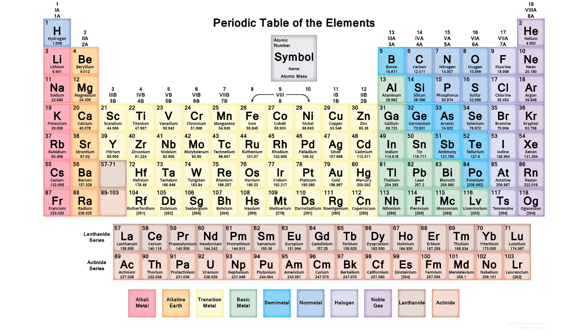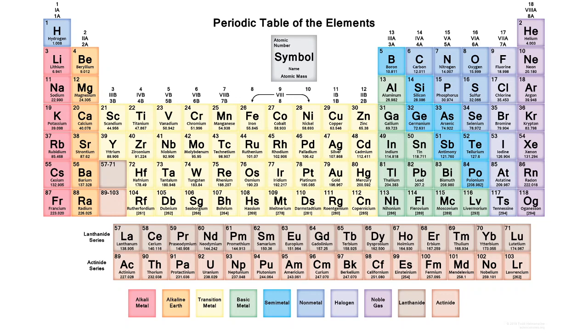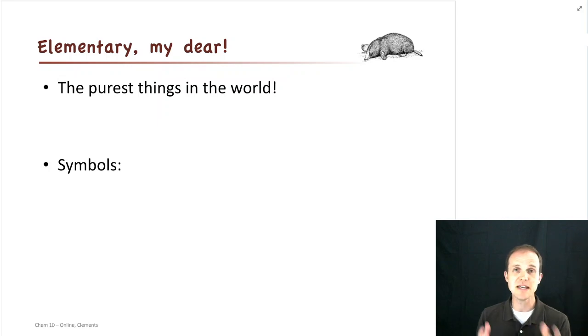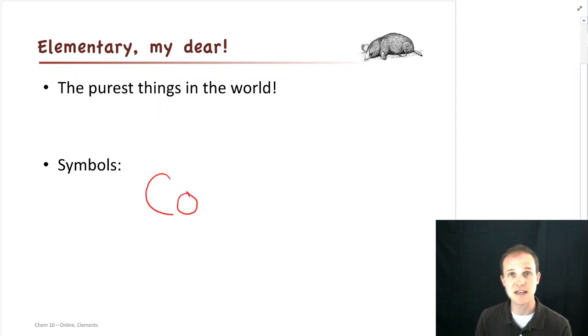So the H is capitalized, the L in LI is capitalized, the N in NA is capitalized. And the next letter, if there is one, is lowercase. And why that's important is because if we're writing out elemental symbols, and we want to write out, say, the elemental symbol for cobalt, what we'd write is CO. And that would tell someone we've got cobalt.